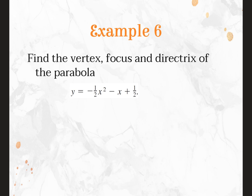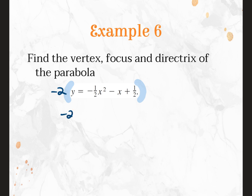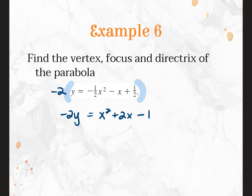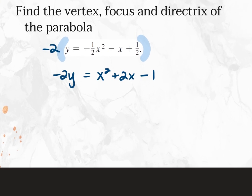Example 6: find the vertex, focus, and directrix. The equation is in expanded form so we need to complete the square. Multiply through by negative 2 first to get rid of fractions: negative 2Y equals X squared plus 2X minus 1. Move the negative 1 to the left side, getting negative 2Y plus 1 equals X squared plus 2X with a space. Complete the square: take 2 divided by 2 equals 1, square it to get 1. Add 1 to both sides.